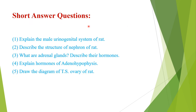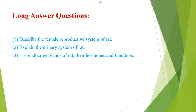Short answer questions: 1. Explain the male urinogenital system of the rat. 2. Describe the structure of the nephron of the rat. 3. What are adrenal glands and describe their hormones? 4. Explain the hormones of the adenohypophysis. 5. Draw the diagram of T.S. ovary of rat. Long answer questions: 1. Describe the female reproductive system of the rat. 2. Explain the urinary system of the rat. 3. List the endocrine glands of the rat, their hormones, and functions. Thank you.